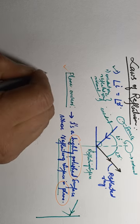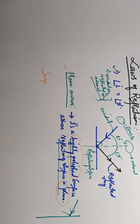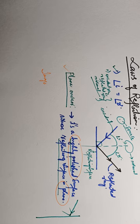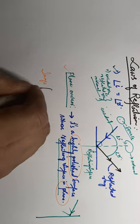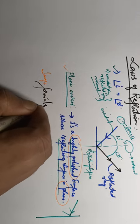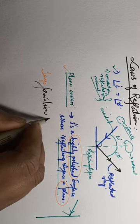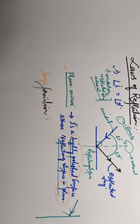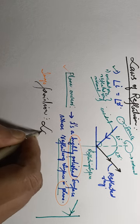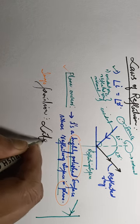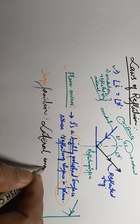When it comes to image formation by a plane mirror, image formation refers to the type of image formed. One very important term in plane mirror image formation is lateral inversion.